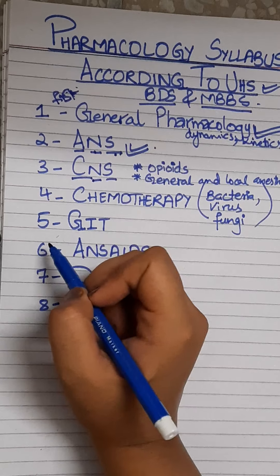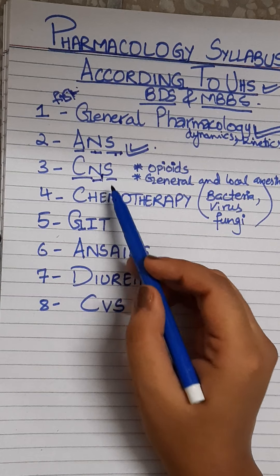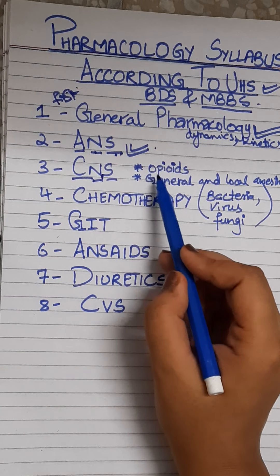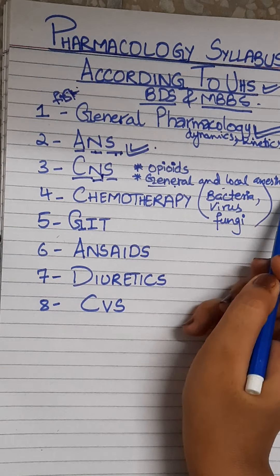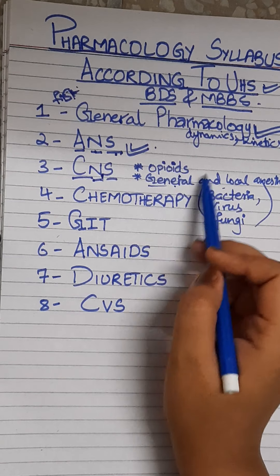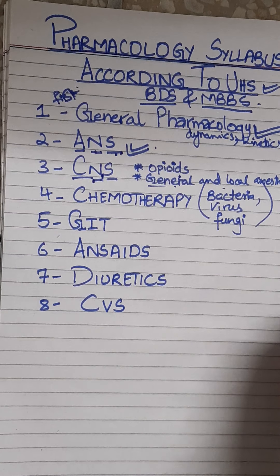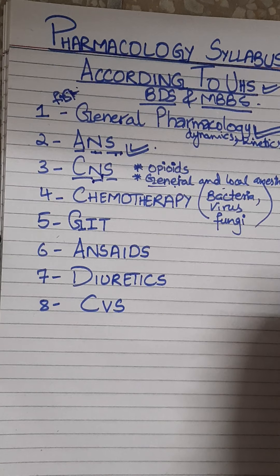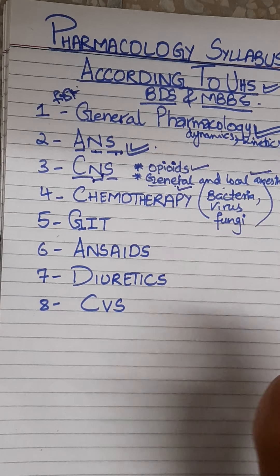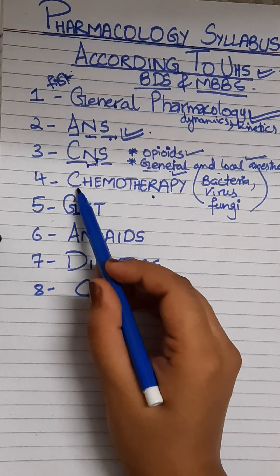Then the most important is the central nervous system. For MBBS students, CNS comprises two to three main topics: general and local anesthesia, as well as opioids. These three topics are very important in CNS. You should also learn the other chapters, but these are the must-do things.